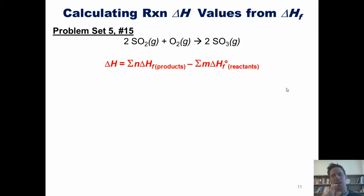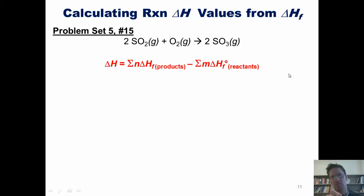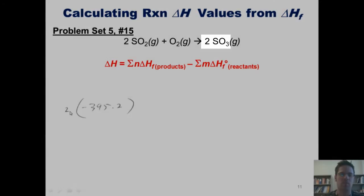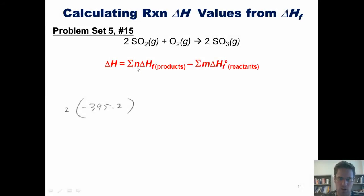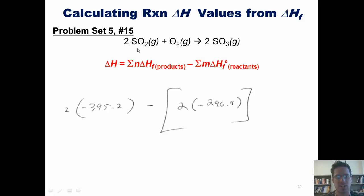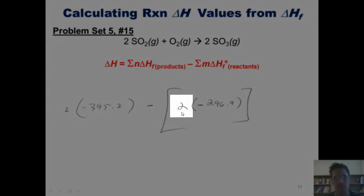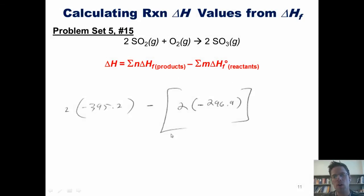To calculate the overall enthalpy the shorthand way, I take the enthalpies of formation of my products and subtract the enthalpies of formation of my reactants. The enthalpy of formation of SO3 is negative 395.2, multiplied by 2 because of the coefficient of 2 in front of SO3. I subtract the enthalpy of formation of SO2, which is negative 296.9, multiplied by 2 due to its coefficient. The final answer comes out to negative 196.6 kilojoules — exactly the same as the long way.